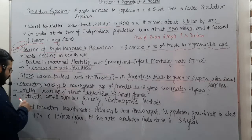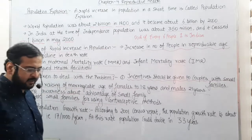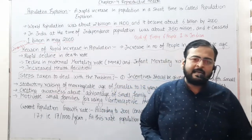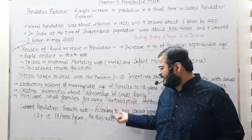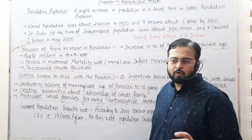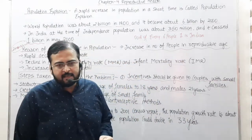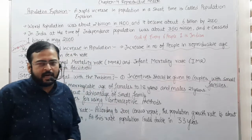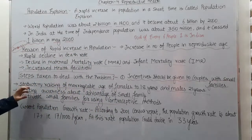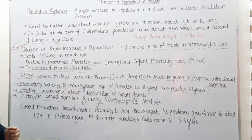The last step is to motivate small families to use contraceptive methods. Couples who already have a child and do not want more children should use contraceptive methods. Making contraceptive methods easily available and creating awareness about them is also the government's responsibility, through which the increase in population can be controlled.